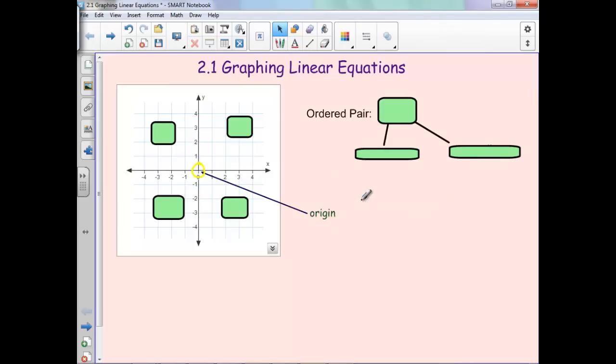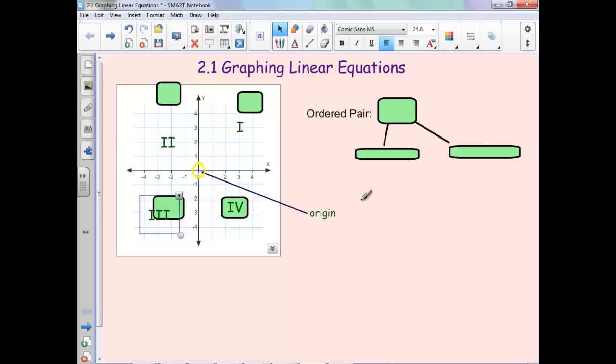When we name our quadrants, we start in the top right corner and go left to right, so there's quadrant 1, quadrant 2, quadrant 3, and this is quadrant 4. So those quadrants you'll need to know.